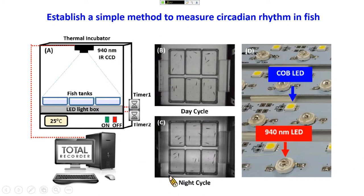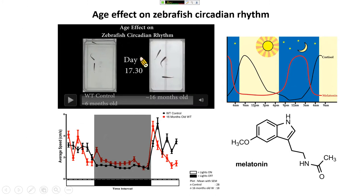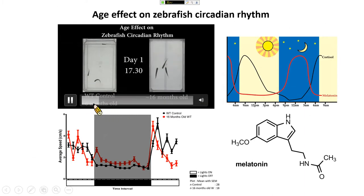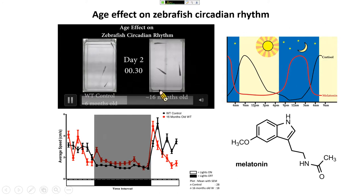In this way, we can monitor fish activity both during the day and at night. This is what we call the light strip array — LED for daylight and LED bulbs for infrared — which we can switch on or off independently. This video shows how well the tool works with zebrafish. The left panel shows a younger fish around six months old with normal circadian activity, and the right panel shows an older fish at one and a half years.